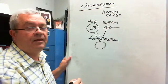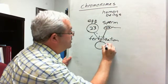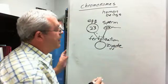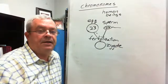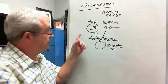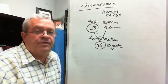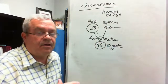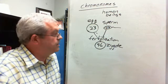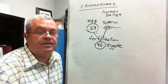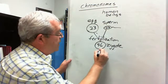Fertilization produces a single cell. Throughout nature, that cell is called a zygote. It is called a zygote. Human zygotes have how many chromosomes? Well, they have 23 plus 23, 46. That's the first cell that has all 23 pairs, all 46 chromosomes. We aren't zygotes anymore. What happened?